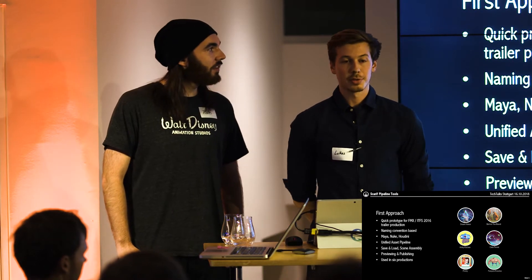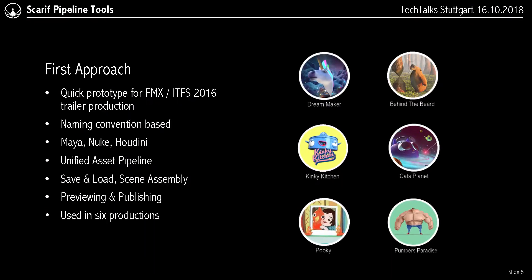In our first semester we came up with our first approach, which was a quick prototype for the FMX and ITFS trailer in 2016 for the trailer production. The pipeline was purely based on naming conventions. We supported Maya and Houdini and centered everything around a unified asset pipeline. We had a saver, loader, scene assembly, and some small previewing and publishing tools, and it was used in six productions.